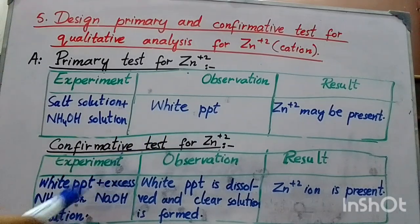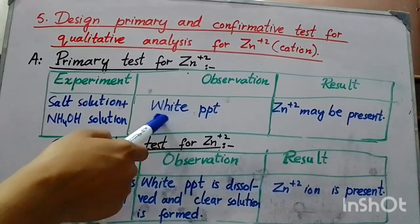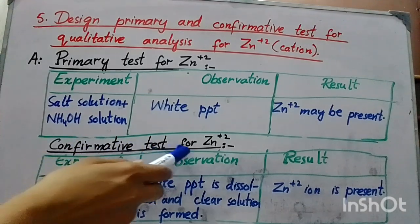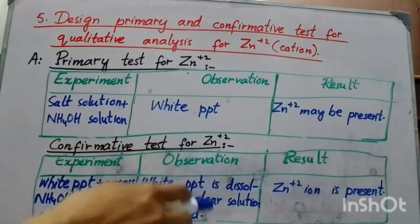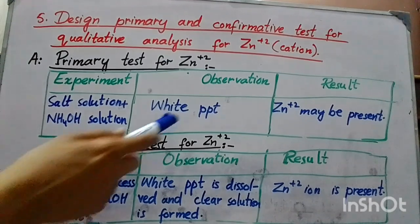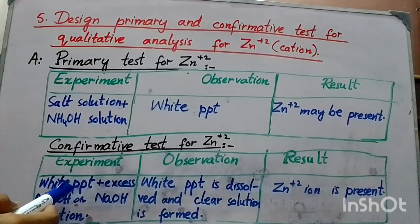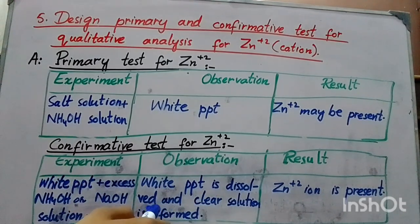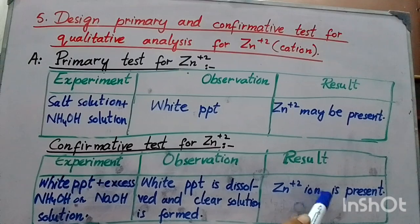For the confirmative test of Zn²⁺, we also use 3 columns: experiment, observation, and result. In the experiment, we take the white precipitate obtained in the primary test and add excess ammonium hydroxide or sodium hydroxide solution. In the observation column, if the white precipitate dissolves and gives a clear solution, then in the result column we confirm that Zn²⁺ is present.